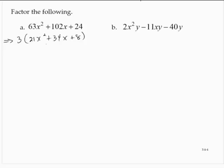All right, so now I'm going to use the AC method. 21 times 8 is 168. I need to find a pair of numbers that multiplies to 168 and adds to 34.